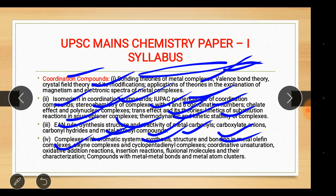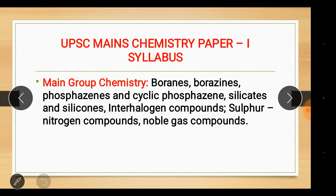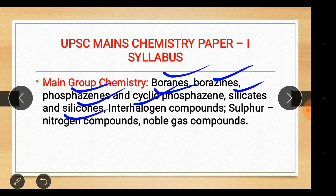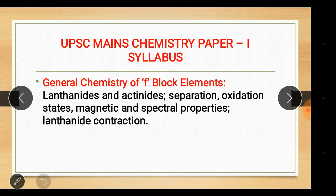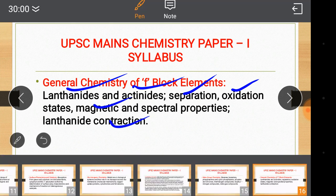Complexes with aromatic systems: synthesis, structure and bonding in metal olefin complexes, alkyne complexes and cyclopentadienyl complexes, coordinative unsaturation, oxidative addition reactions, insertion reactions, fluxional molecules and their characterization, compounds with metal-metal bonds and metal atom clusters. Main group chemistry: boranes, borazines, phosphazines, cyclic phosphazines, silicates and silicones, interhalogen compounds, sulfur-nitrogen compounds, noble gas compounds, general chemistry of f-block elements — lanthanides, actinides, separation, oxidation states, magnetic and spectral properties, lanthanide contraction.